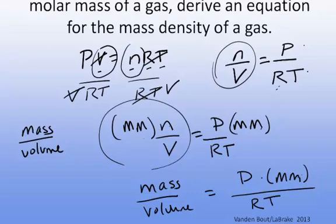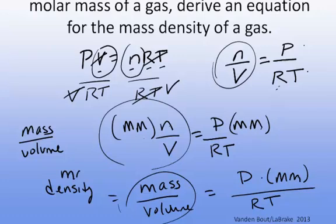...divided by RT. So the mass density of a gas is equal to the pressure of the gas times the molar mass of the gas, divided by the gas constant times the temperature of the gas.